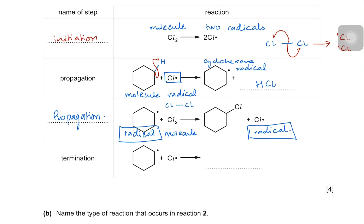In the termination step, two radicals are attacking each other — the cyclohexane radical attacks the chlorine radical. Both radicals make a bond, producing chlorocyclohexane (1-chlorocyclohexane), with no new radical generated.